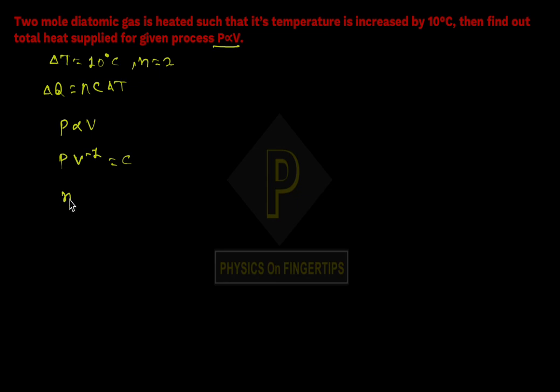...m value comes out to be -1. When m = -1, we know C = Cv - R/(m-1). So here we can substitute Cv value.